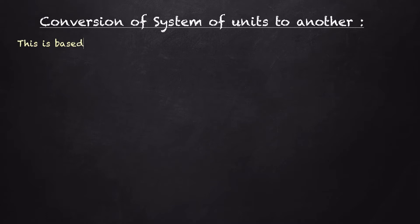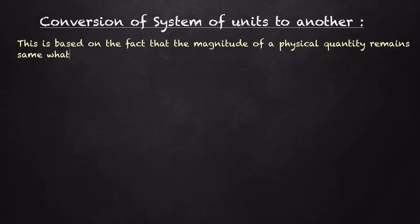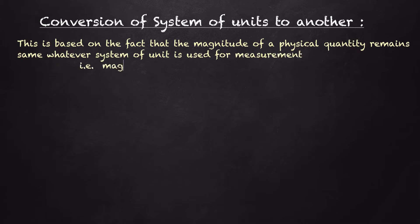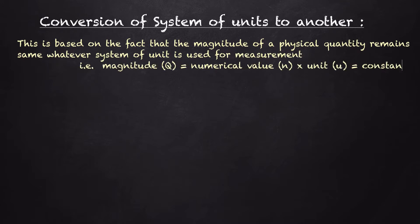This is based on the fact that the magnitude of a physical quantity remains the same whatever system of unit is used for measurement. We know that the magnitude of a physical quantity equals the product of numerical value times unit, that is Q = N × U, and it is constant. So if NU is constant, then we can write N₁U₁ = N₂U₂.